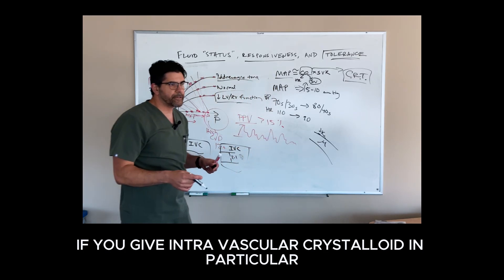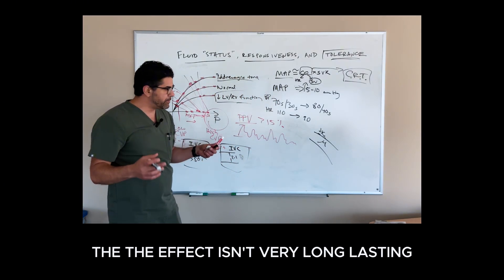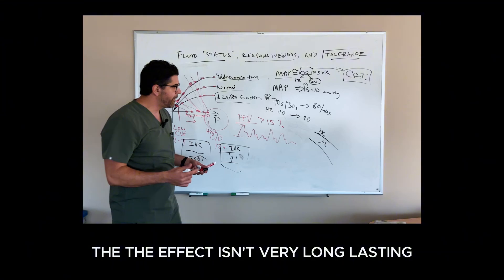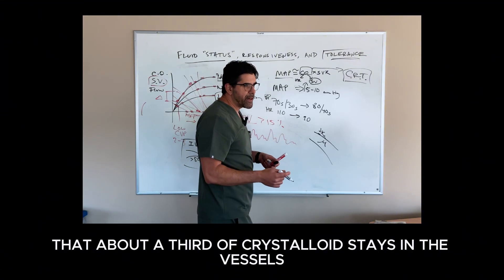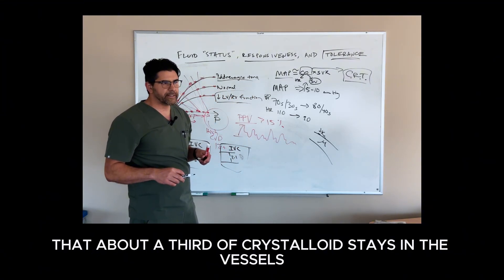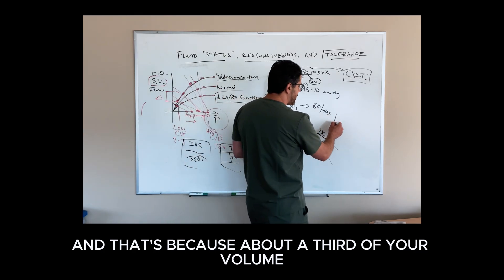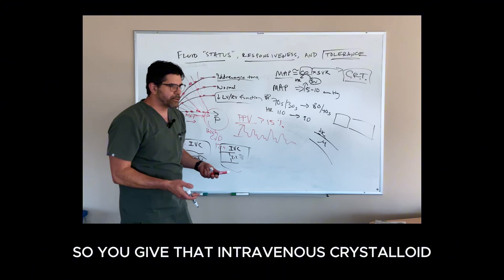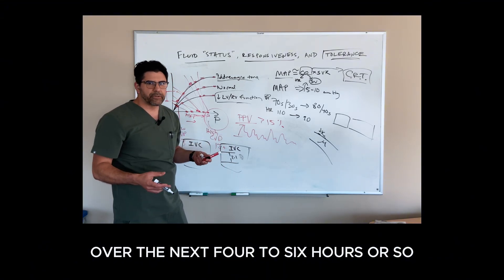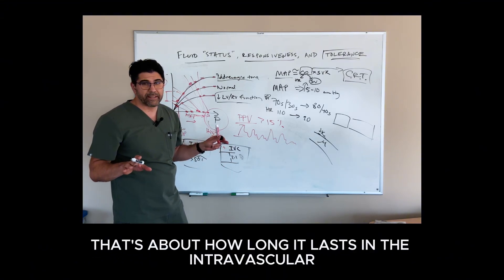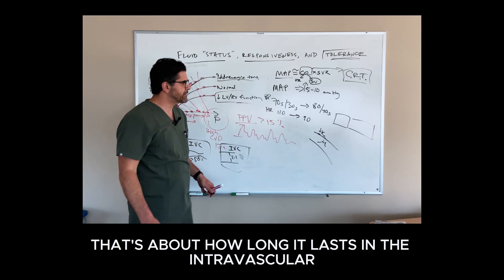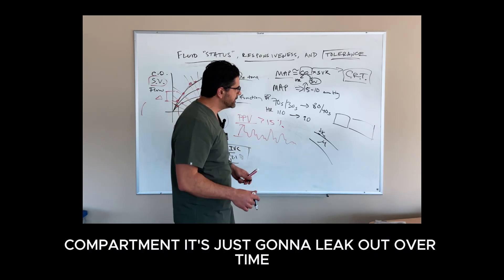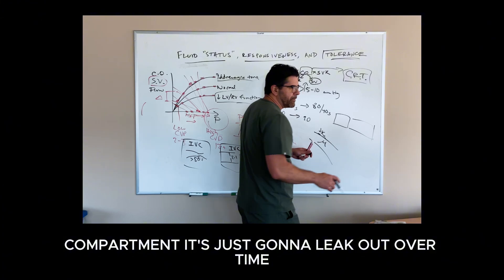If you give intravascular crystalloid in particular, the effect isn't very long lasting. You've probably heard the rule of thumb that about a third of crystalloid stays in the vessels. That's because about a third of your volume in your body is intravascular. The other two thirds are extravascular. So you give that intravenous crystalloid over the next four to six hours or so, and that's the, even in healthy people, that's about how long it lasts in the intravascular compartment. It's just going to leak out over time.